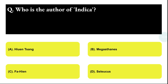Next question: who is the author of Indica? Option A: Hiuen Tsang, Option B: Megasthenes, Option C: Fahien, Option D: Seleucas. The correct answer is option B, that is Megasthenes.